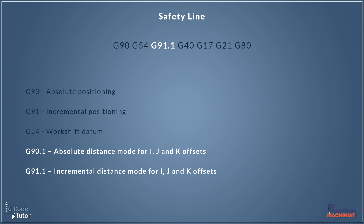G91.1 is applicable on some machines but not all. When we're calculating our radiuses, this tells the machine we're using an incremental distance from the center point of our radius to the point of our cutter. We can also use absolute distance modes for this. So when we're programming with I, J, and K, some machines require us to add this in, some do not. Most machines tend to use G91.1 as standard, but every machine is different. This tells the machine that dimensions to the center point of our radius come either from our datum position or from the last known position of the cutter.